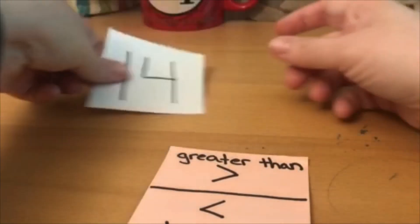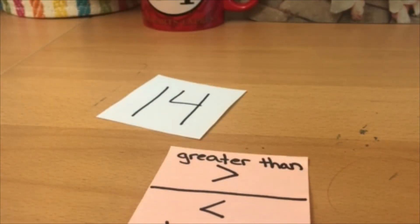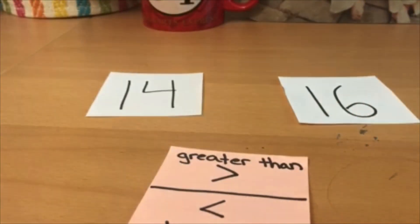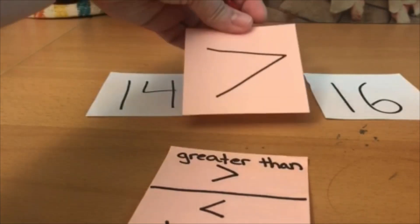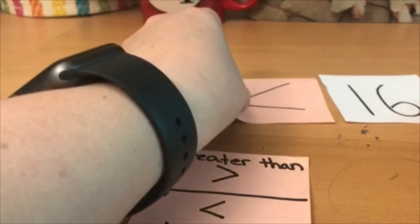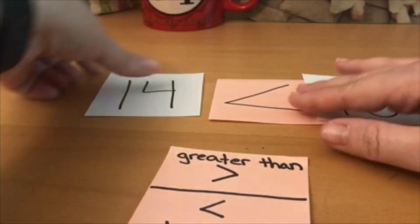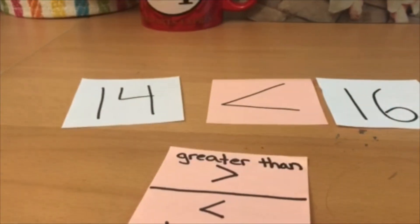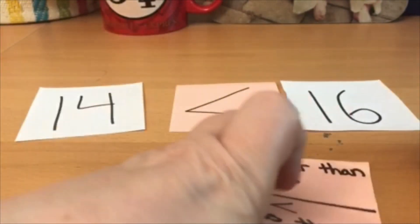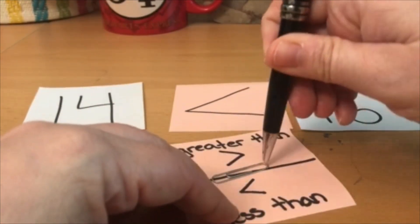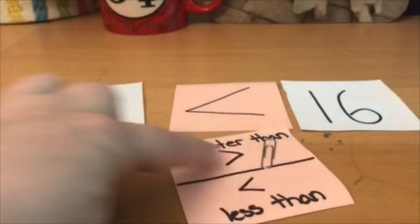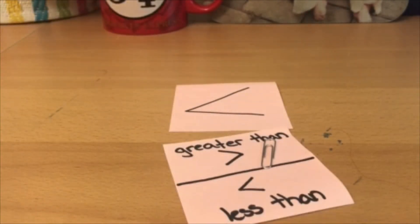So then to play, my partner and I would each pick a card. I got 14. My partner got 16. So which way does the card need to go? This way, because 16 is the number that the mouth wants to eat. So 14 is less than 16. Now let's use our spinner to see who the winner is. Greater than, so my partner would get the numbers.